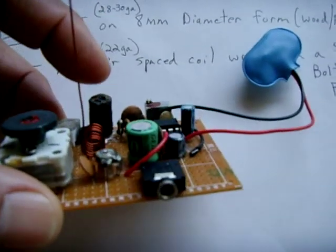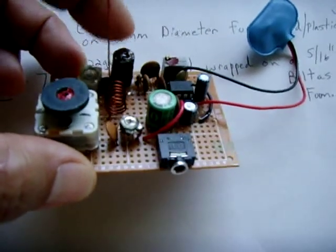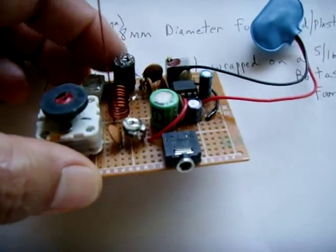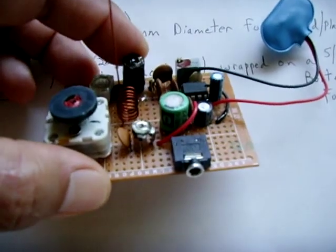You can see that right here. I put some E6000 over it so it doesn't come apart. It's all contained. So this is the actual circuit right here.